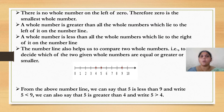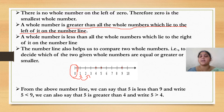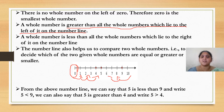There is no whole number on the left of 0. Therefore, 0 is the smallest whole number. If you observe the picture, we are not having any number to the left — we are having only numbers on the right side. A whole number is greater than all the whole numbers which lie to the left of it on the number line. A whole number is less than all the whole numbers which lie on the right of it. When moving right we get greater values, and moving backward we get smaller values.